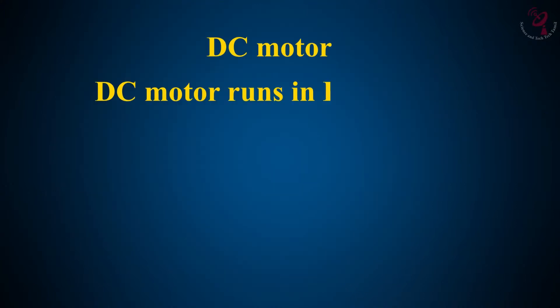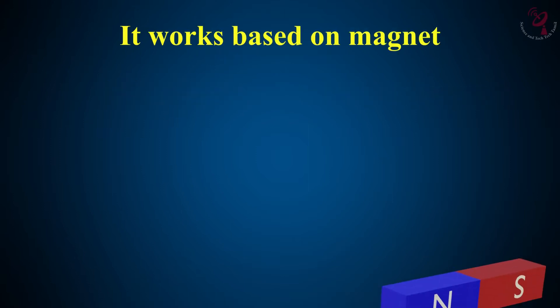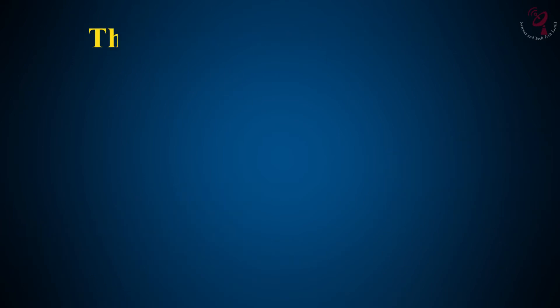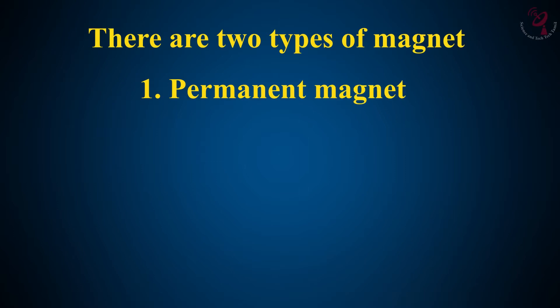The DC motor runs on direct current, so it is called the DC motor. It works based on a magnet. Let's see about magnetism. The magnet is classified into two types: permanent magnet and electromagnet.